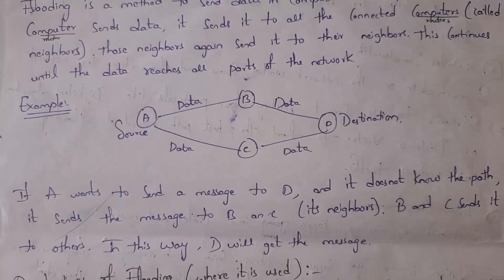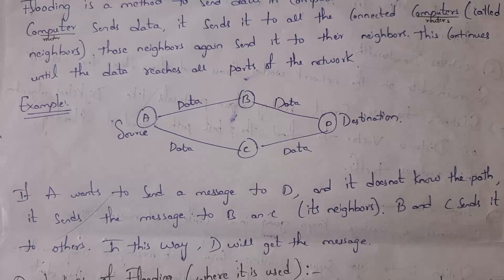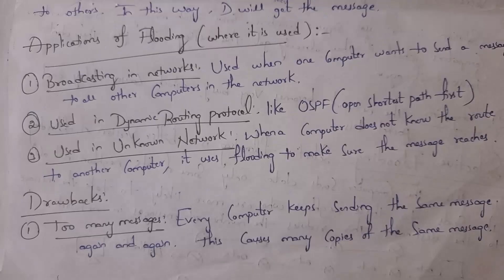In threading, each router sends data to all its connected routers. Similarly, those routers send data to their neighbors. Data keeps threading until it successfully reaches the destination.